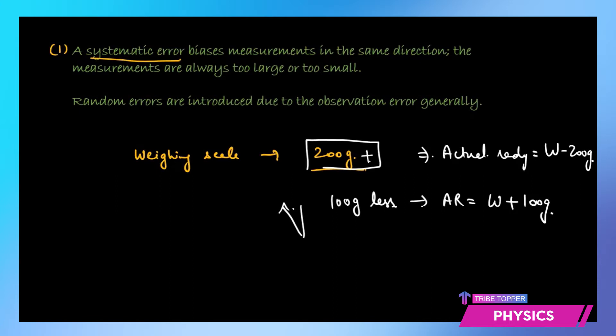Those are systematic errors — you can check how much error it is introducing and sometimes you can correct the measurement. Random errors are basically introduced by observation error most of the time. For example, you are checking the time period of something and you start or end the stopwatch a little late. So in all 20 readings you are going to get a different answer. That is an error caused by observation — that is a random error.